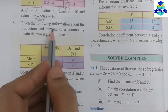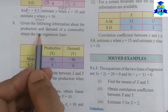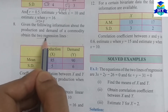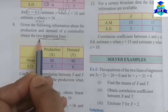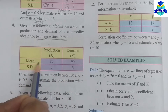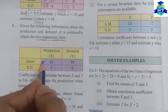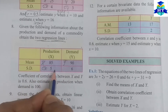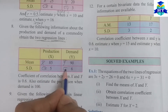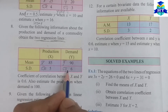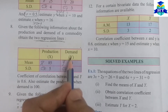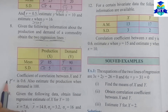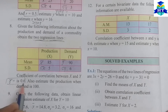Question number 8: given the following information about the production and demand of a commodity obtained from two regression lines — X on Y and Y on X. We have arithmetic mean of X, mean of Y is 85. Standard deviation of X is 5, standard deviation of Y is 6. Coefficient of correlation R is 0.6.